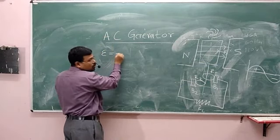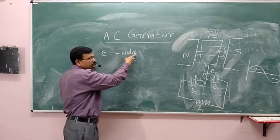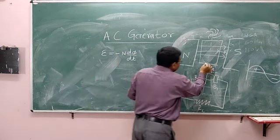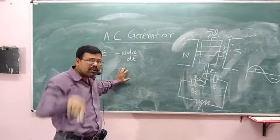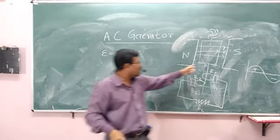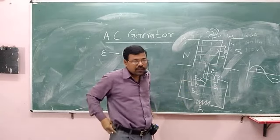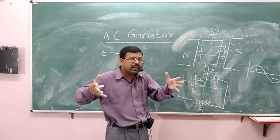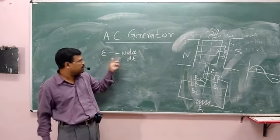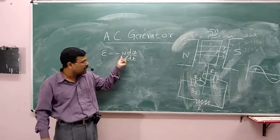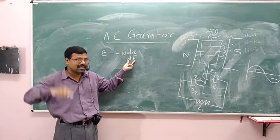The induced EMF is equal to minus N times dΦ/dt. It depends on the number of turns in the coil — larger the number of turns, larger will be the induced EMF. If the coil contains only one turn, it will have less EMF; if it contains a thousand turns, the induced EMF will be more. It also depends on how fast the magnetic flux linked with the coil changes.